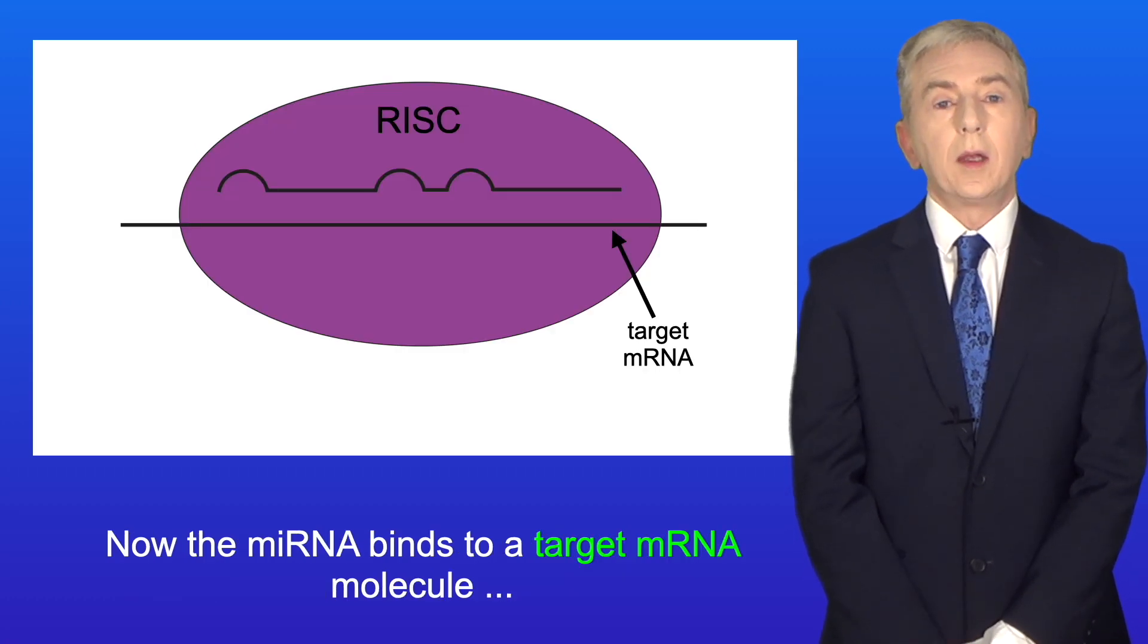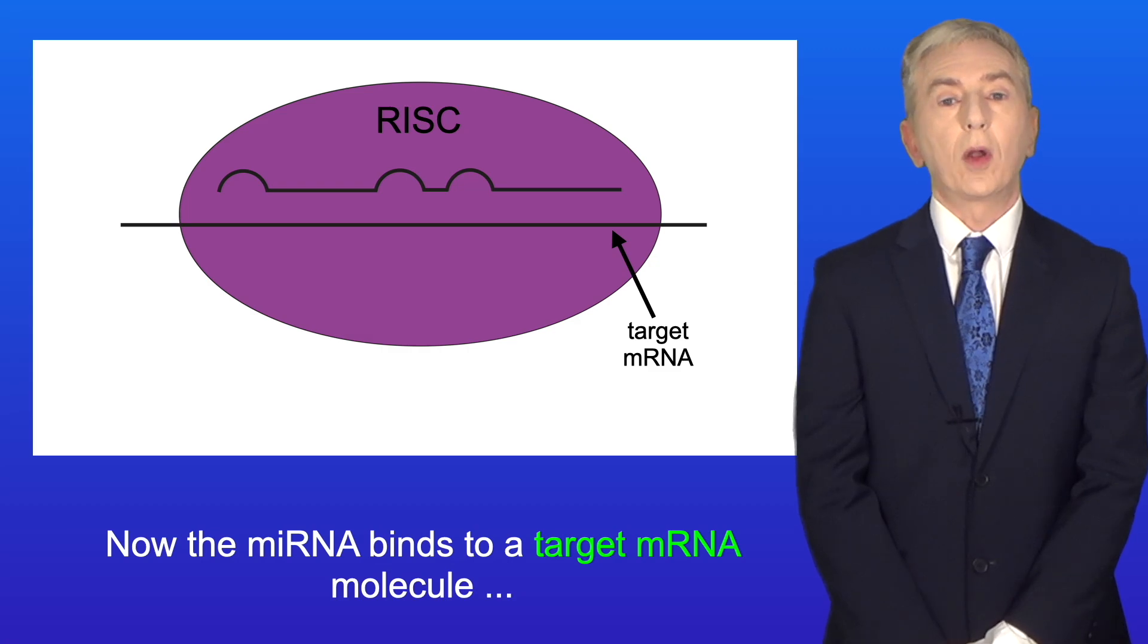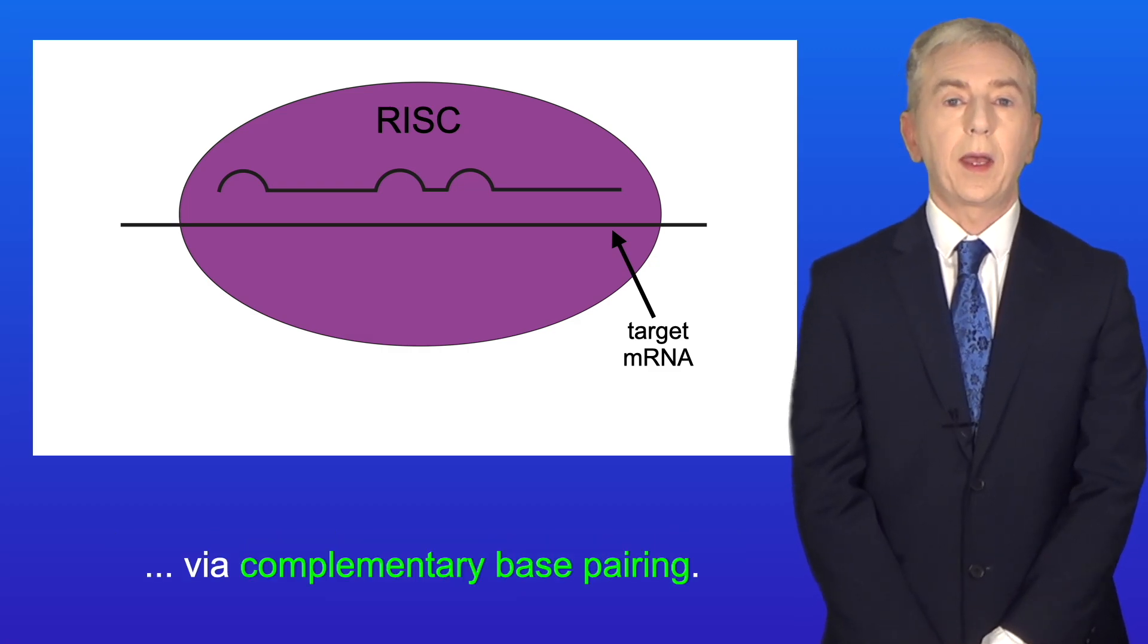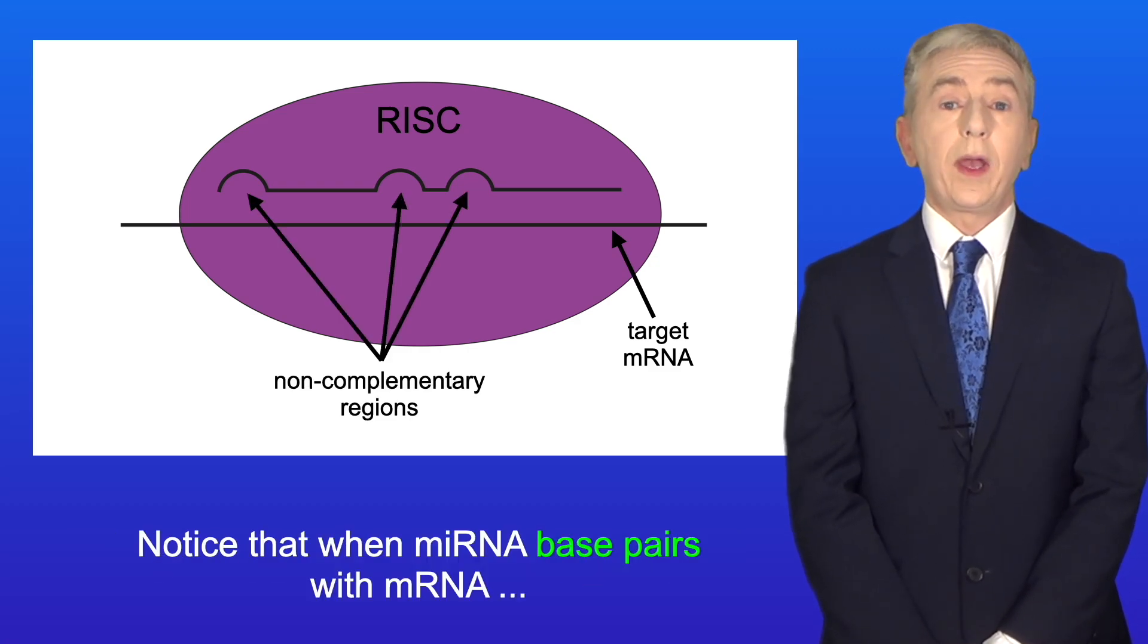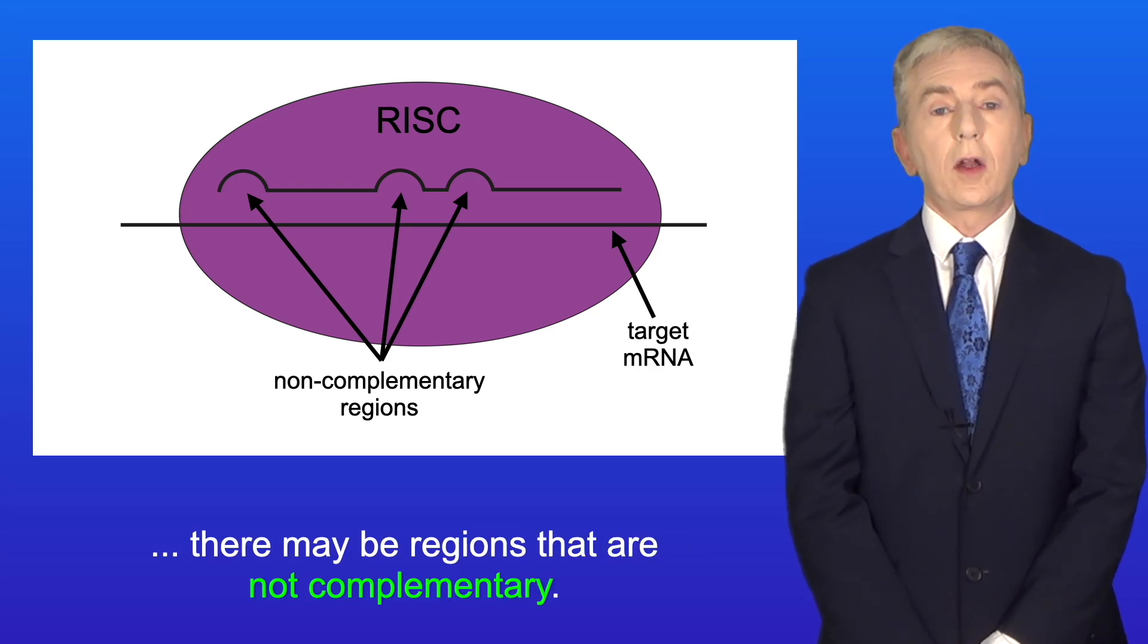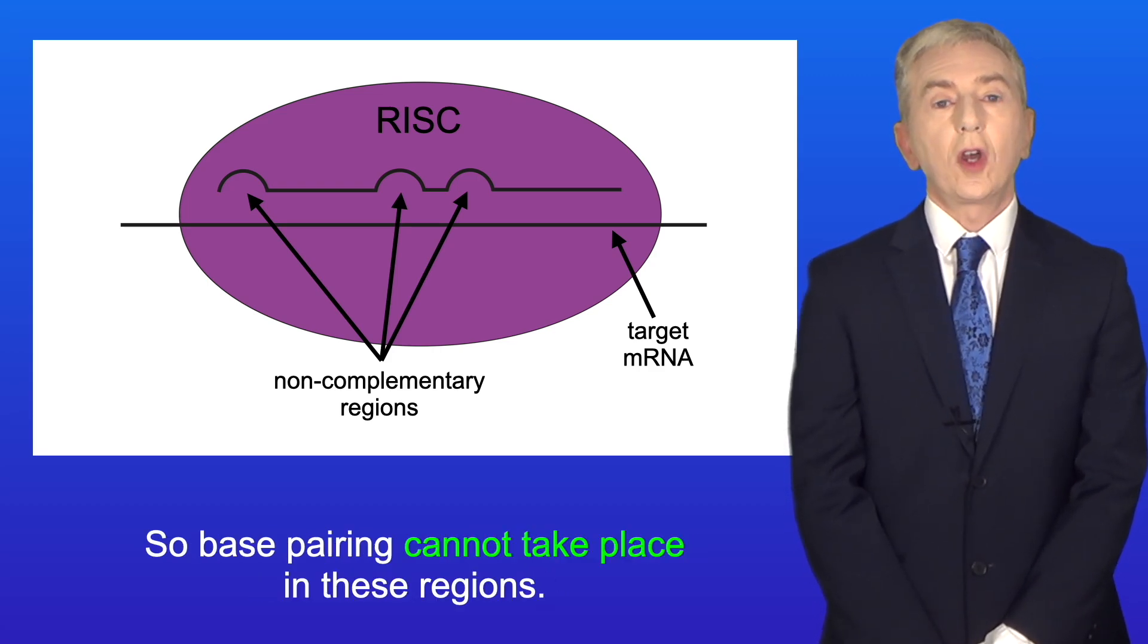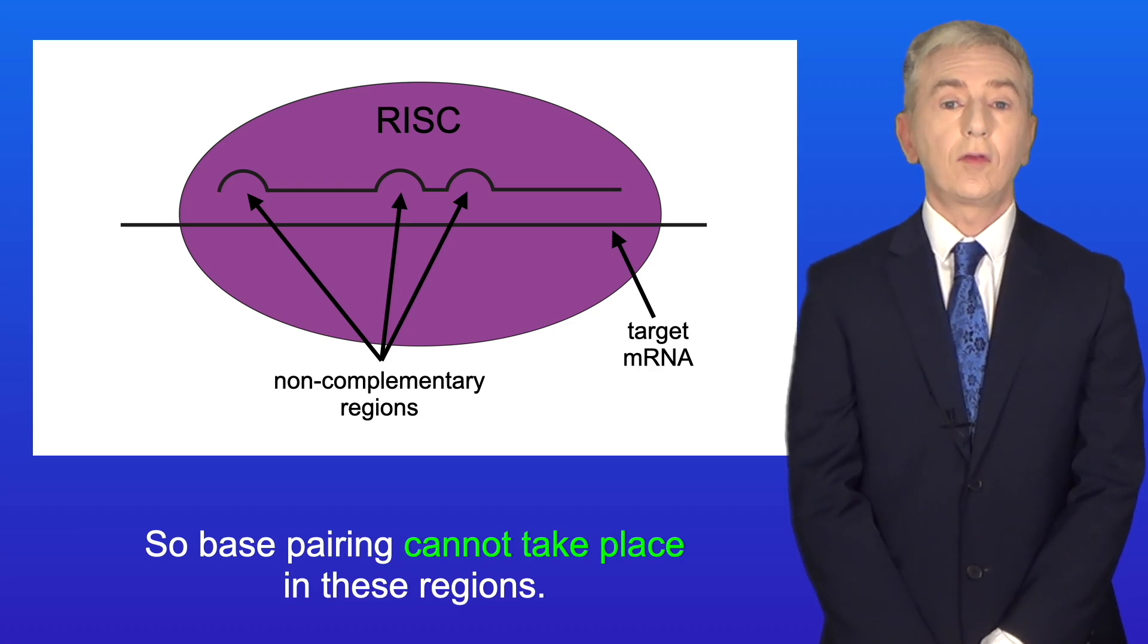Now the miRNA binds to a target mRNA molecule via complementary base pairing. Notice that when miRNA base pairs with mRNA, there may be regions that are not complementary. So, base pairing cannot take place in these regions.